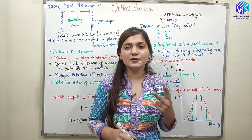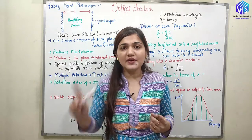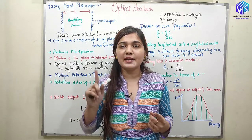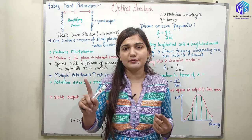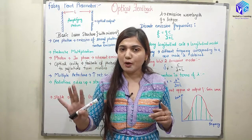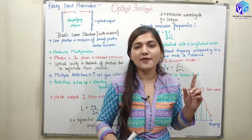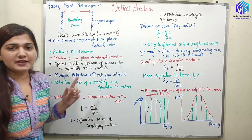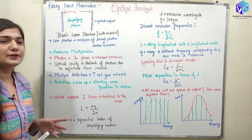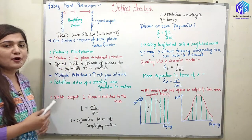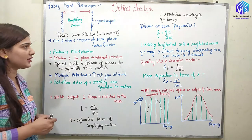Optical feedback is the second concept that is required for lasing action. The first concept required for lasing action was population inversion, which we already know in detail. Now we have to understand optical feedback, and we are going to understand it with the help of the Fabry-Perot resonator structure.